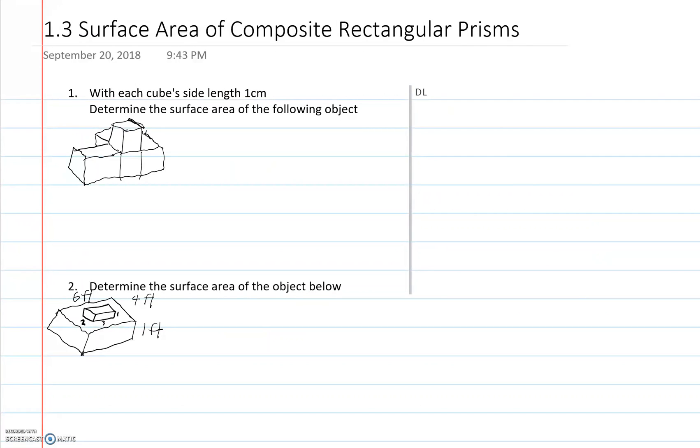Hello and welcome to my video, Topic 1.3, Surface Area of Composite Rectangular Prisms. This is from Topic 1.3 in the Math Makes Sense 9 textbook.